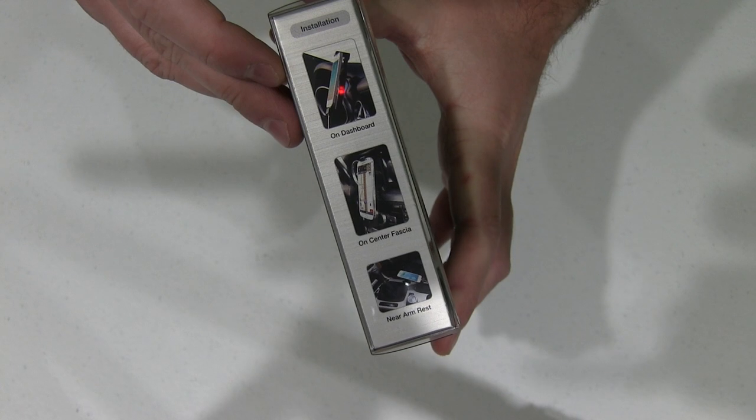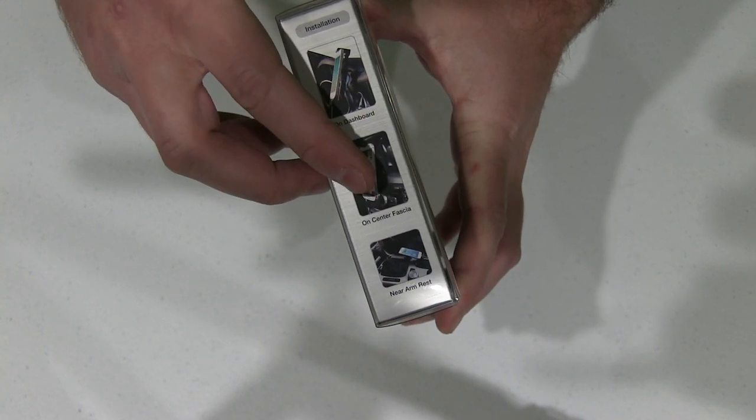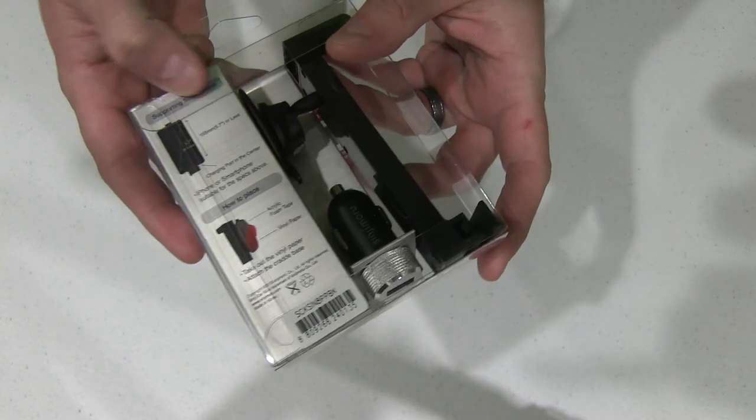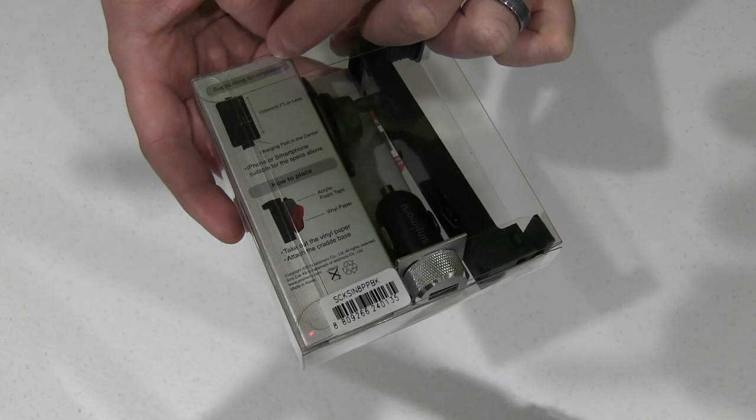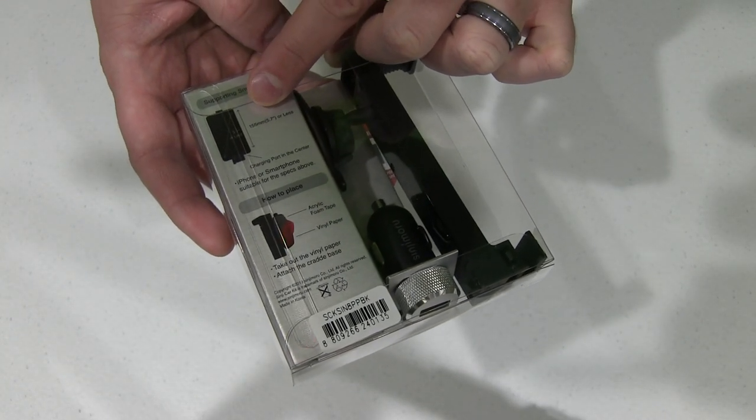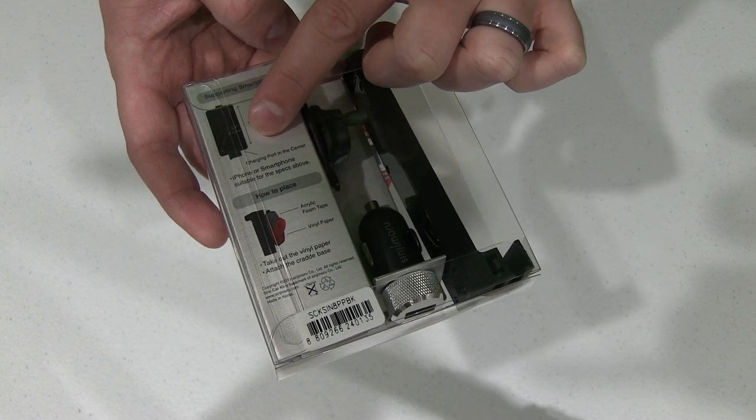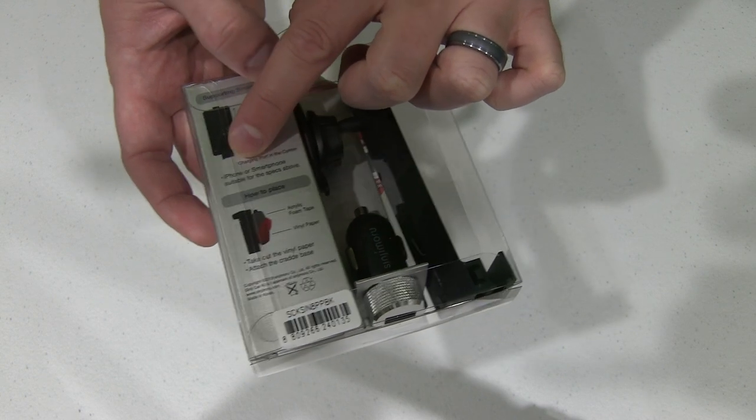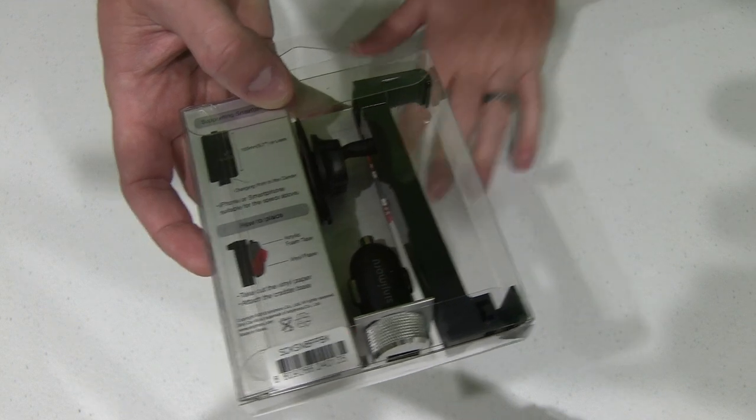On the side here it says installation on dashboard, on center console, near armrest. So it's got a lot of versatility when it comes to mounting. It supports smartphones that are 155 millimeters, 5.7 inches or less. Charging port in the center. iPhone or smartphone suitable for the specs above.